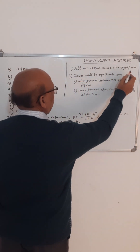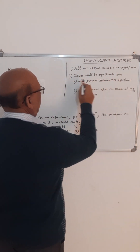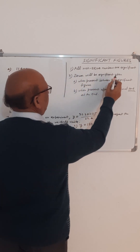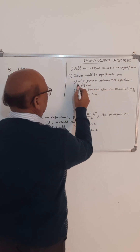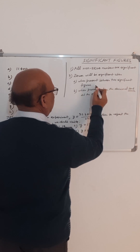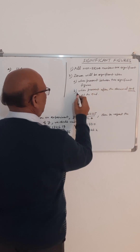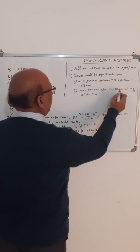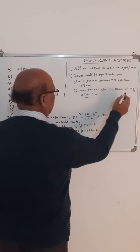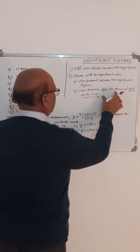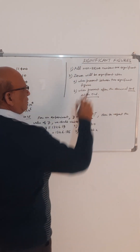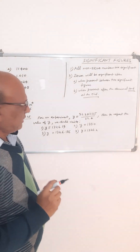all non-zero numbers are significant. And number two, zeros will be significant when: number one, when present between two significant figures, and number two, when present after the decimal and at the end. If these two conditions are satisfied, then the zeros will become significant.